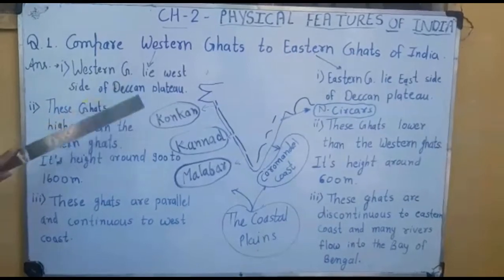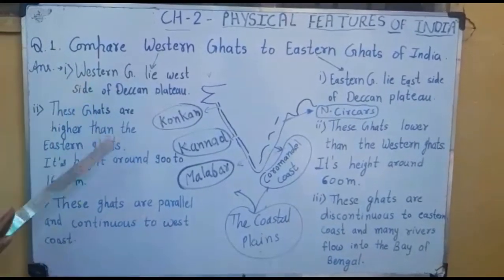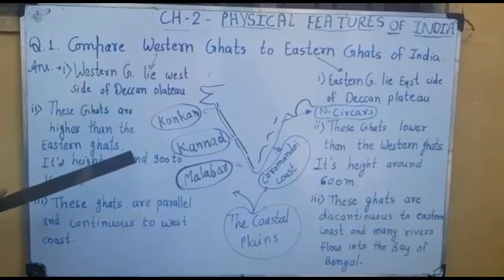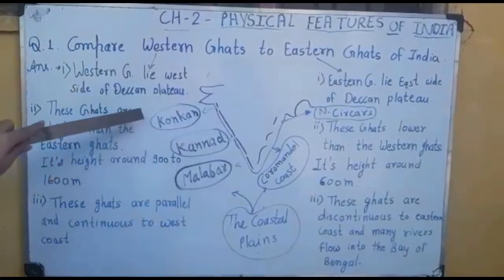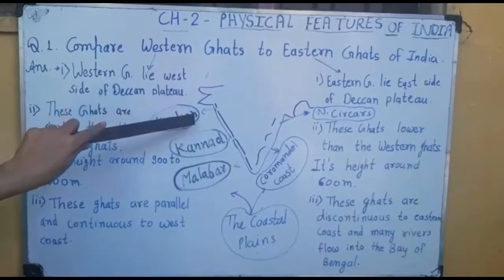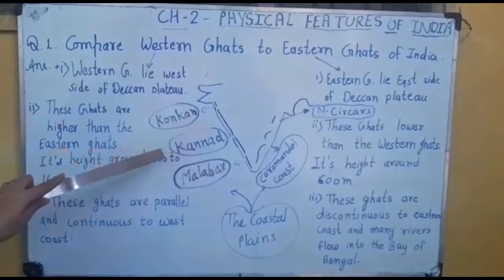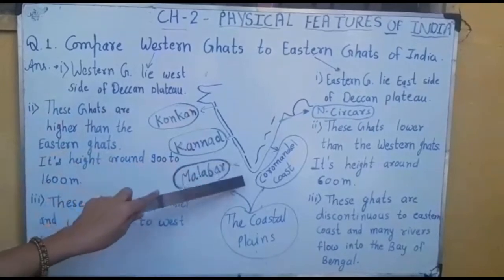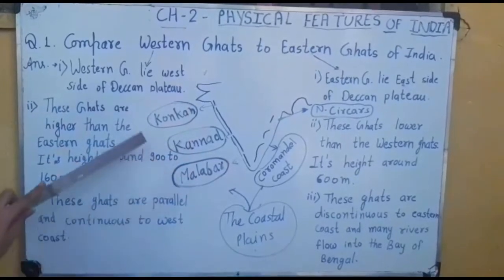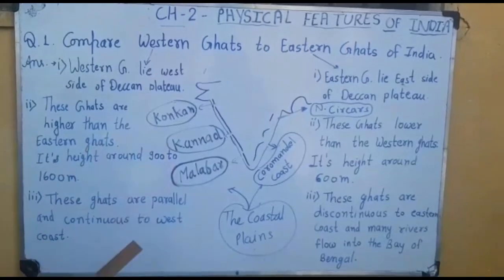These coastal plains are covered with sand soil, and ocean and sea waves come and go continuously on that land. The western coastal plains are divided into three coasts. First is the Konkan coast, from Mumbai to Goa. Then the Karnataka area is covered by the Kanara coast, and the Kerala coast is called the Malabar coast. These are the three divisions of the western coastal plains.